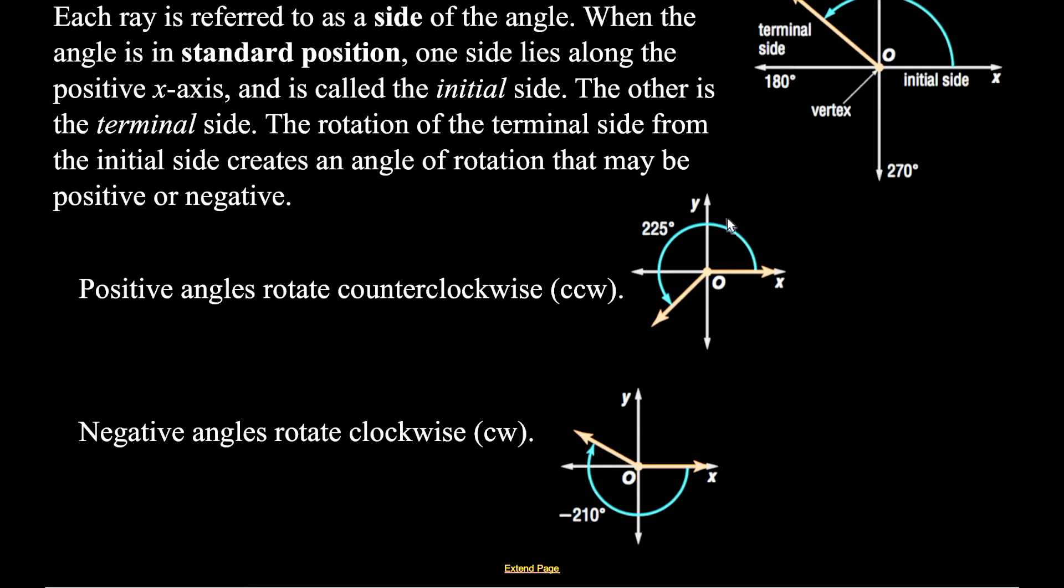So if you wanted to draw a positive angle, you start and go up into the first quadrant and on around. That's counterclockwise. But if you start and go from the fourth quadrant around, that's called a negative angle.